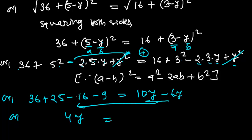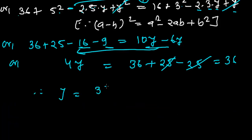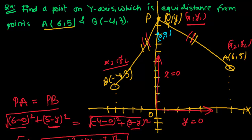Simplifying the constants: 36 + 25 − 16 − 9 = 36. So 4y = 36, therefore y = 36 ÷ 4 = 9. Our answer is y = 9, meaning the point is P(0, 9). This point on the y-axis is equidistant from both A(6, 5) and B(−4, 3).